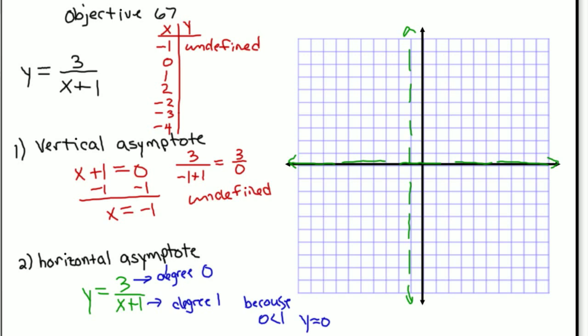And one at a time, I substitute these back into the equation y equals 3 over x plus 1, and I calculate what the y value is. So if x is 0, y comes out to 3. If x is 1, y comes out to 1 and a half. If x is 2, y comes out to 1. If x is negative 2, it comes out to negative 3. If x is negative 3, it comes out to negative 1 and a half. And if x is 4, it comes out to negative 1.